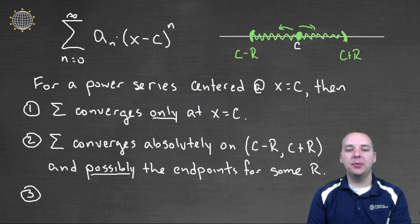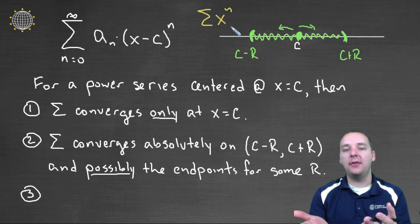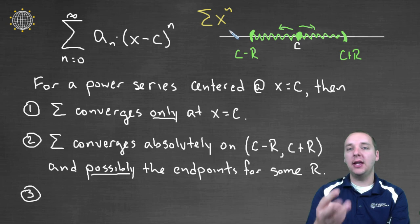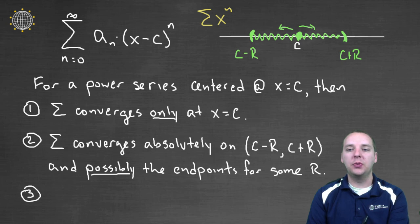Here's a simple example that we could see right off the bat. If you had the sum of x to the n, then this will converge as long as x is between plus or minus one, because it looks like a geometric series. But once you go past one, it will diverge. For instance, if you added up two to the n, two plus four plus eight plus sixteen plus thirty-two, clearly that will diverge if you go too far past one.